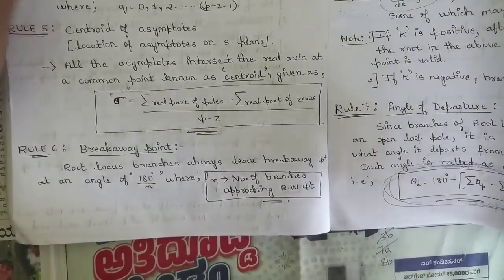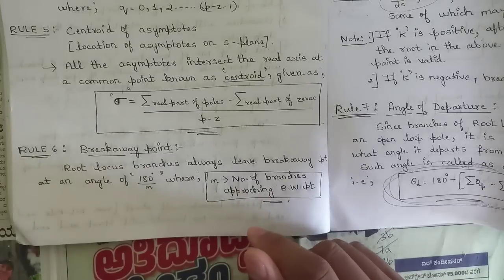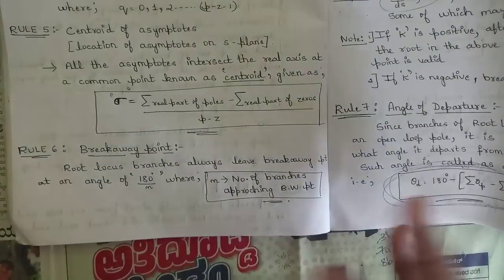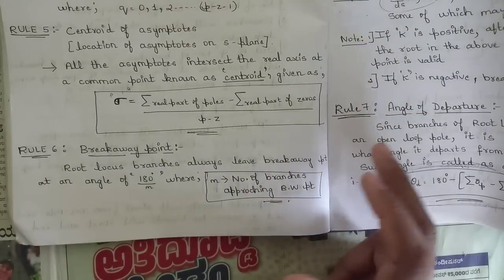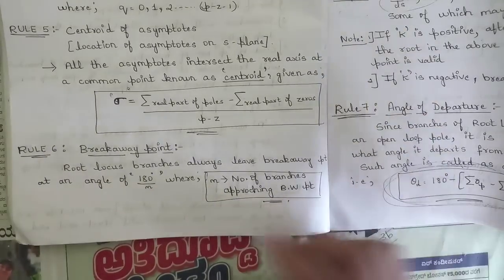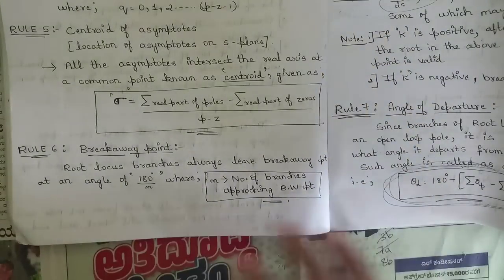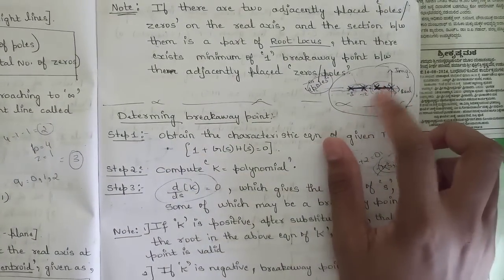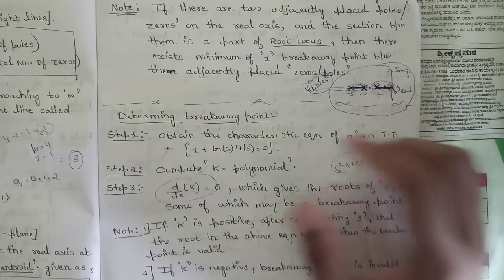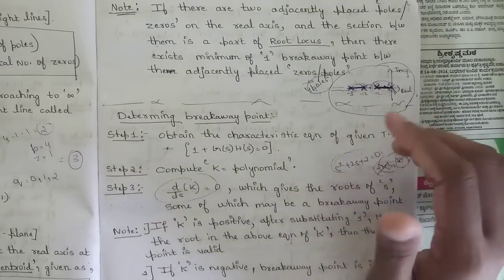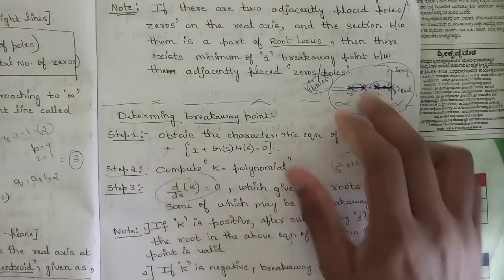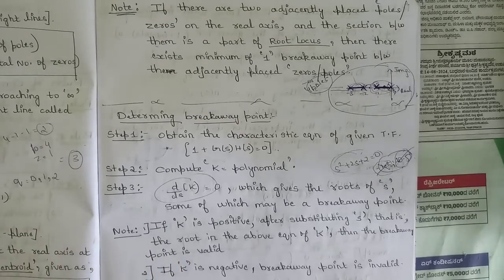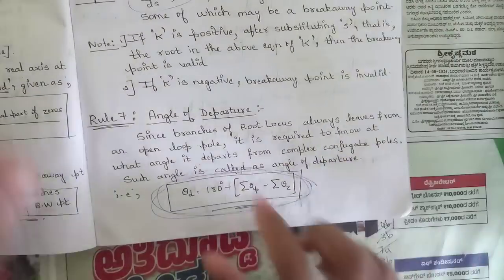For the breakaway point, first take the characteristic equation 1 + G(s)H(s) = 0, solve it, and write K separately with all other terms on the other side. Then take the derivative dK/ds, set it to zero, and find the roots. Check whether those roots are valid breakaway points by verifying whether they lie on the root locus. A segment of the real axis is part of the root locus if the number of poles to the right is odd; if even, it is not part of the root locus.